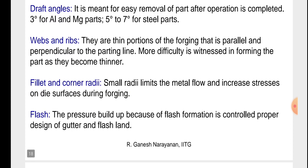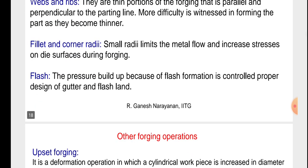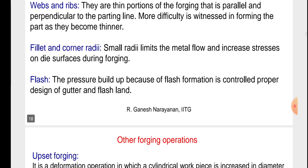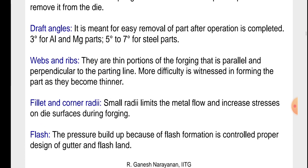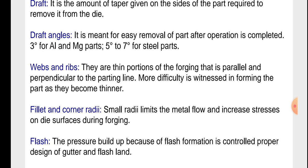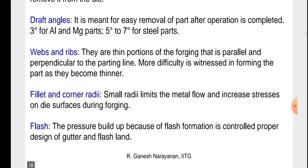Fillet and corner radii. Small radii limit the metal flow and increase stresses on die surfaces during forging. The pressure build-up because of flash formation is controlled by proper design of the gutter and flash land.